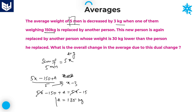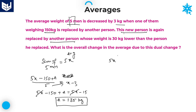A is equal to 135. This is the new person's weight. Again, the sentence says this new person is again replaced by another person. The initial sum of 5 members is 5x.